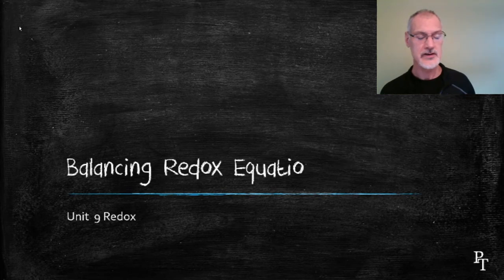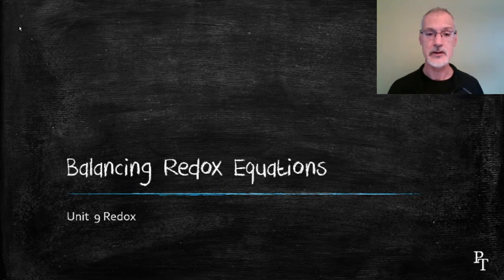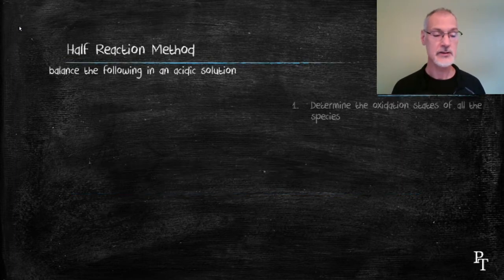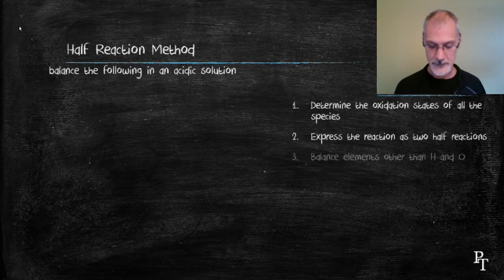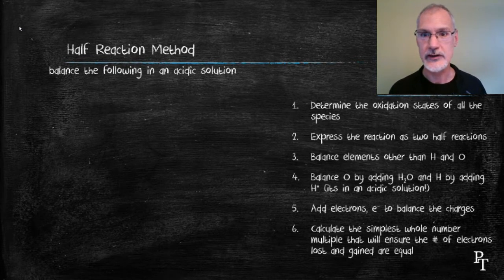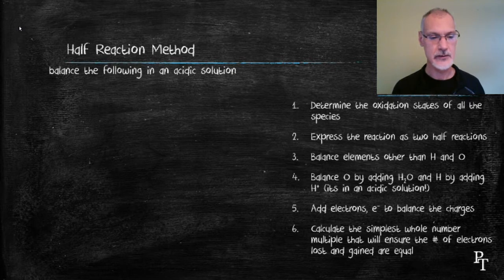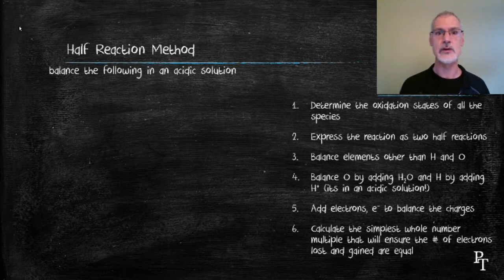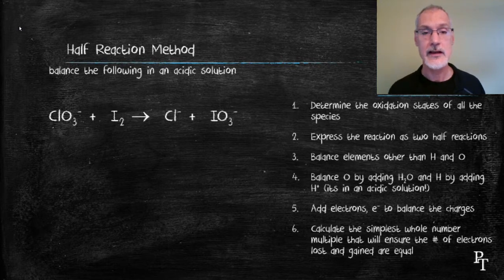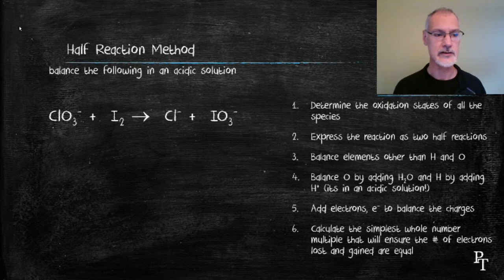Hello and welcome again. We're going to take a look at balancing something called redox equations. These particular equations are going to seem a little bit different than what you've seen before — we're going to be pulling water, acid, and base particles into play to balance these equations. We'll first list some points about how to balance these equations and then apply them to an example. We'll be balancing this equation in an acidic solution, which means we can grab water molecules or acid particles to help balance the equation.